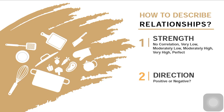If we talk about strength, it could be having no relationship or no correlation. Or it's very low. The relationship is moderately low, moderately high, very high. Or we have what we call a perfect relationship.